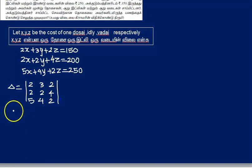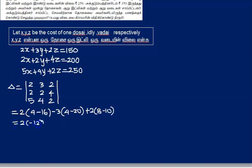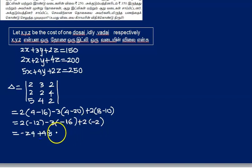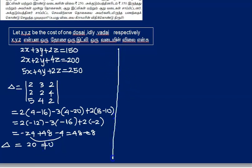Expanding the determinant: 2 into (4 minus 16) minus 3 into (4 minus 20) plus 2 into (8 minus 10). That gives 2 into (minus 12) minus 3 into (minus 16) plus 2 into (minus 2), which is minus 24 plus 48 minus 4. Delta equals 20. Since delta is not equal to 0, we can apply Cramer's rule.